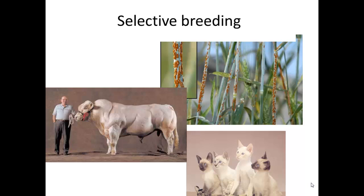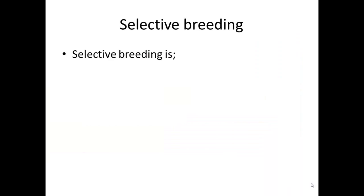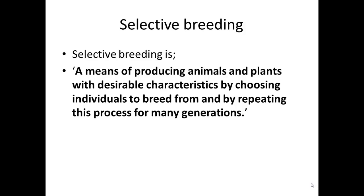We're talking about selective breeding for the IGCSE specification. The definition is: selective breeding is a means of producing animals and plants with desirable characteristics by choosing individuals to breed from and by repeating this process for many generations. In a sense, you could redefine this as being artificial selection.